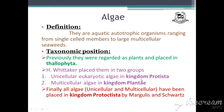First, algae were kept in the group Thallophyta. Later, Whittaker, who did the 5-kingdom classification, placed them in 2 groups — unicellular and multicellular. The unicellular eukaryotic algae he placed in Kingdom Protista and multicellular algae in Kingdom Plantae. But finally, all algae — unicellular and multicellular — have been placed in Kingdom Protoctista by Margulis and Schwartz's classification, which we have already covered in chapter 3.